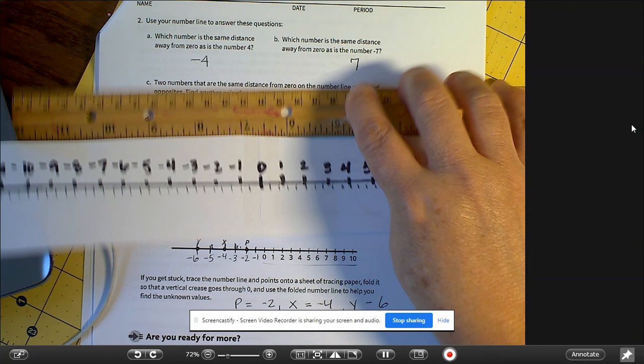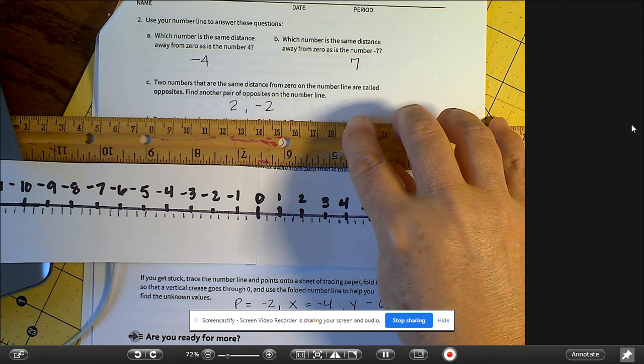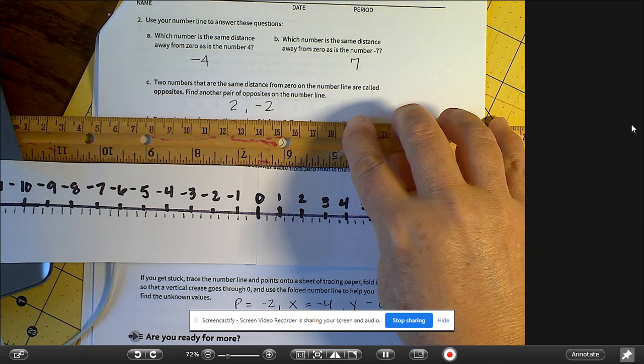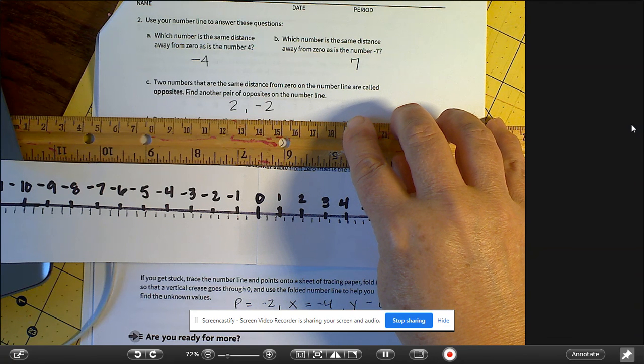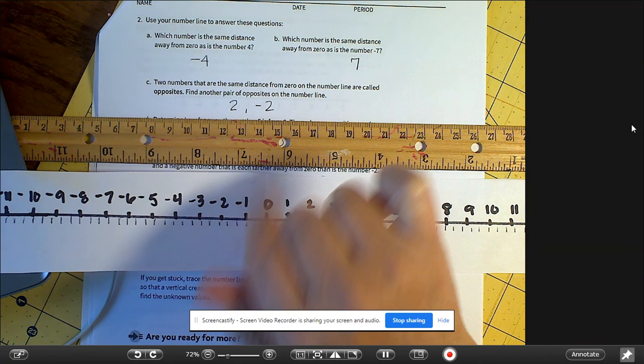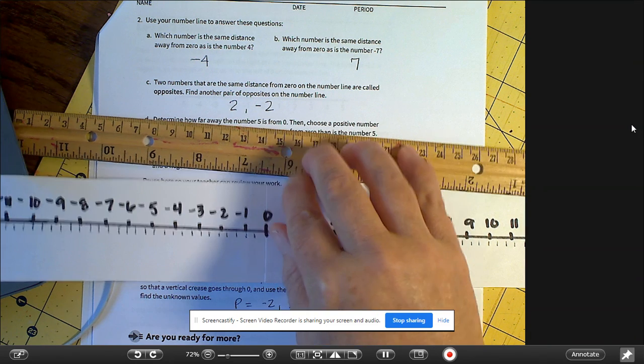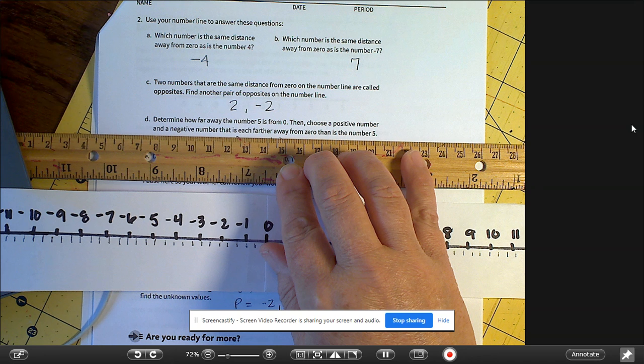And it says two numbers that are the same distance from zero on the number line are called opposites. Find another pair of opposites on the number line. So I chose 2 and negative 2. But it can be 10, negative 10, 8, negative 8. The only thing it cannot be is zero.